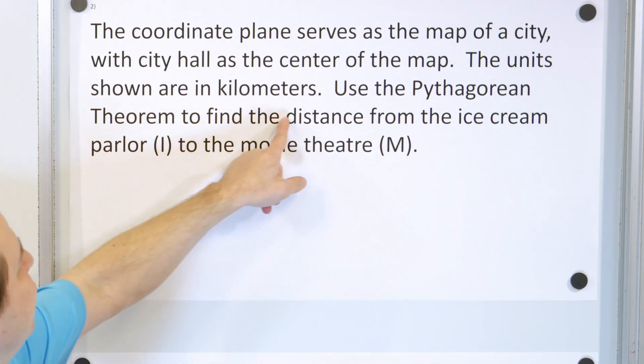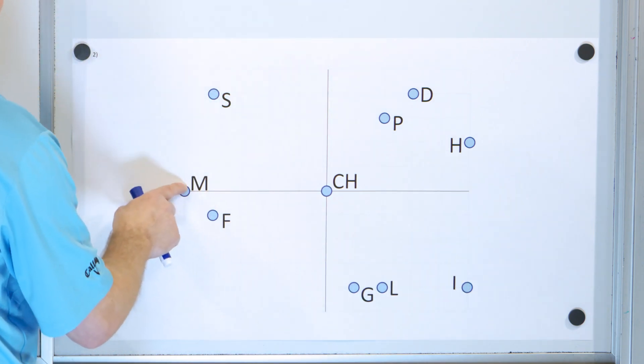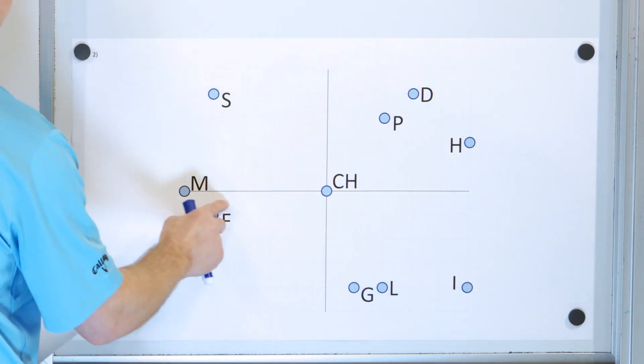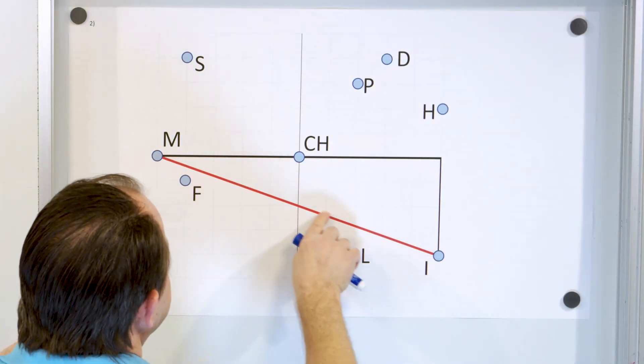All right, let's take a look at problem number two. We're going to use the Pythagorean theorem to find the distance from the ice cream parlor I to the movie theater M. So the ice cream parlor is here and the movie theater is here. So we're trying to find this straight line distance. So let's draw that distance and find a triangle that fits.